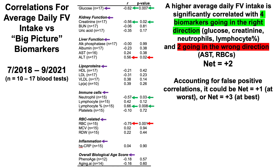Note that with a p-value threshold of less than 0.05, five out of 100 comparisons may be false positives — one in 20. We're looking at 22 comparisons here, so we can expect around one false positive association. Accounting for that, the net may not be plus two but plus one — if one of the four green correlations is a false positive — or at best plus three, if one of the red correlations is actually a false positive.